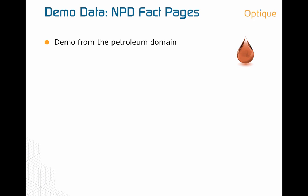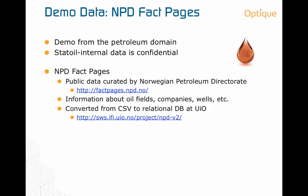For this demo, we wanted to show you an example from the petroleum domain. Of course, Statoil's internal data is confidential, so we could not use that. We decided instead to use the NPD Factpages. This is public data curated by the Norwegian Petroleum Directorate. It contains information about oil fields, companies, wells, etc. At the University of Oslo, we have converted this data from comma-separated values into a relational database.